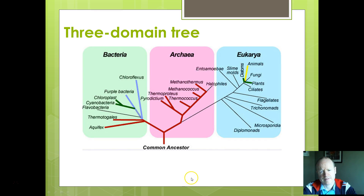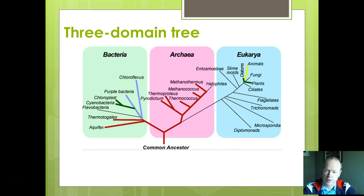Here's another tree showing different relationships. Every time there's a branch, that's showing you that organisms are coming off from a different common ancestor. Those common ancestors may not exist today — they may be extinct. But we can track back through fossil evidence and by looking at RNA samples to judge where their differences may have occurred.